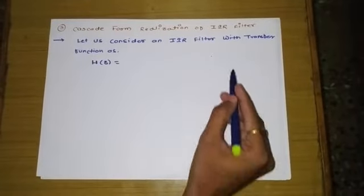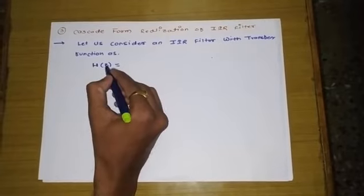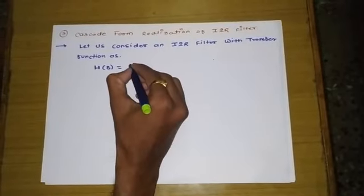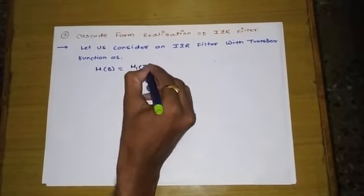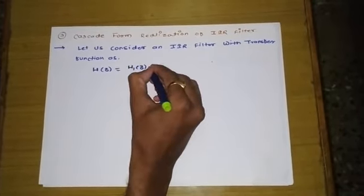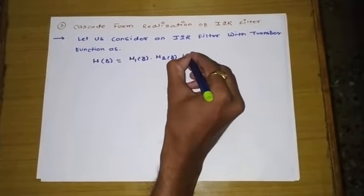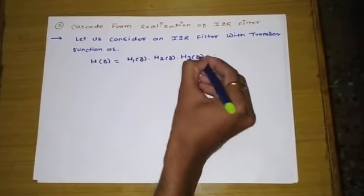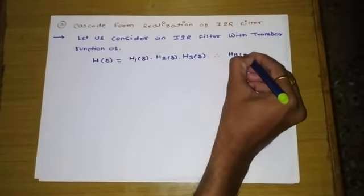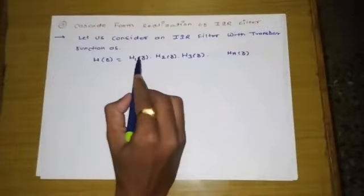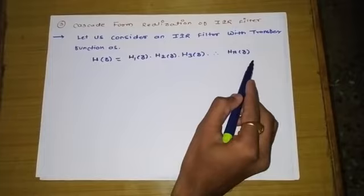Consider an IIR filter with transfer function H(Z). This H(Z) is divided into several subsystems connected in series, such as H1(Z) · H2(Z) · H3(Z) ... H_N(Z). All systems are connected in series, meaning they are multiplied with each other.